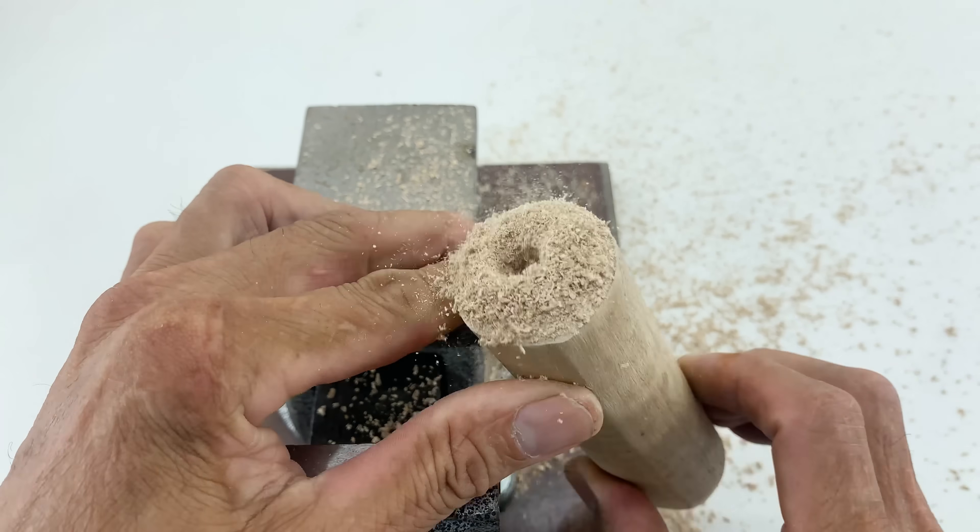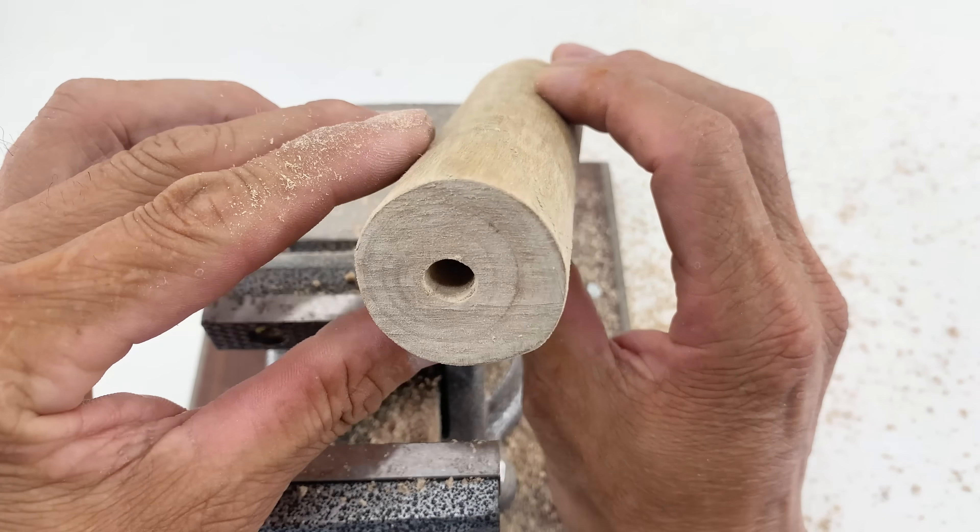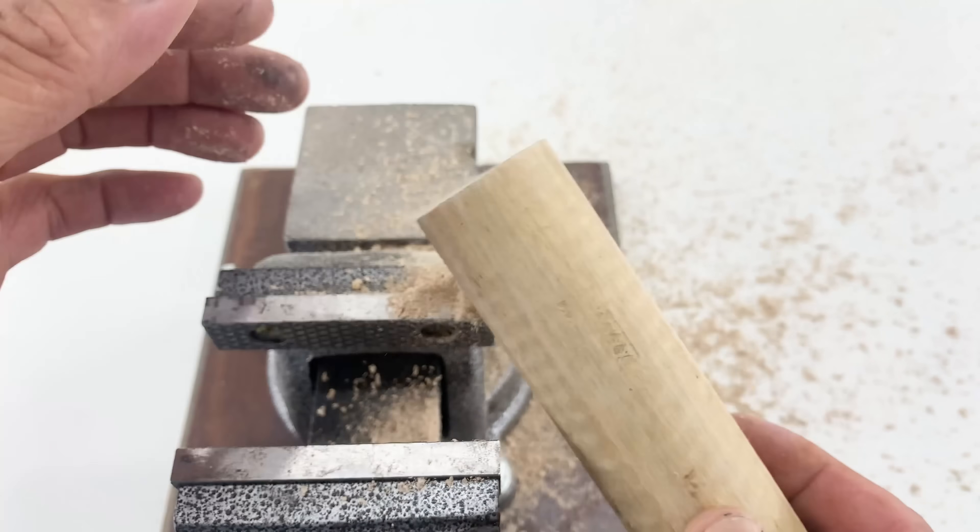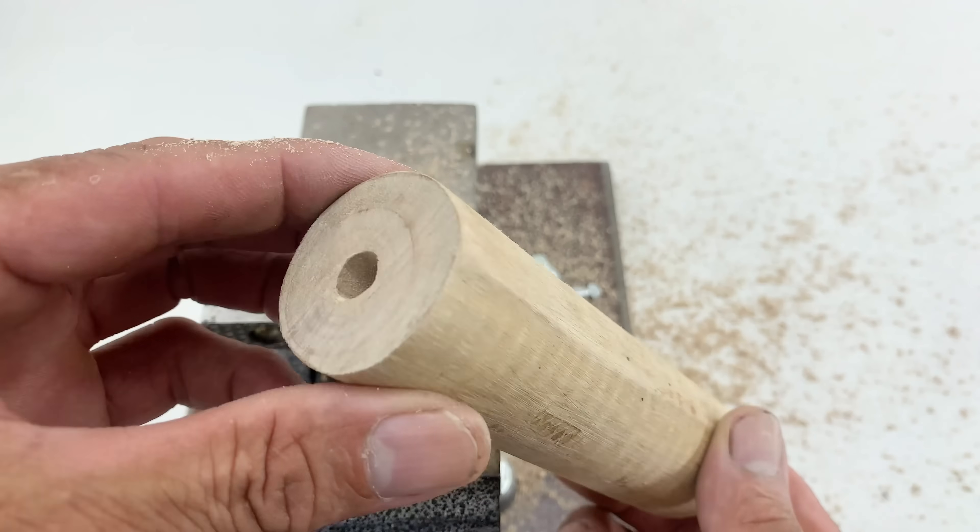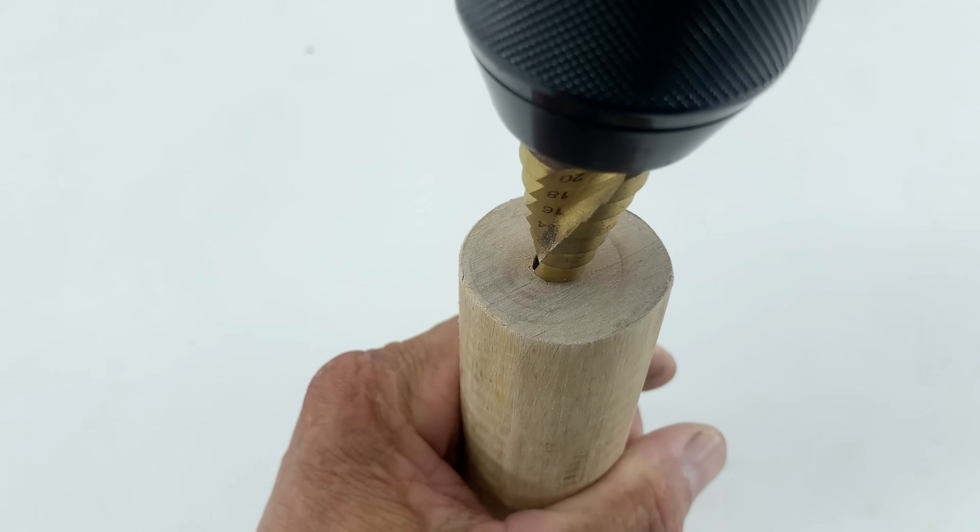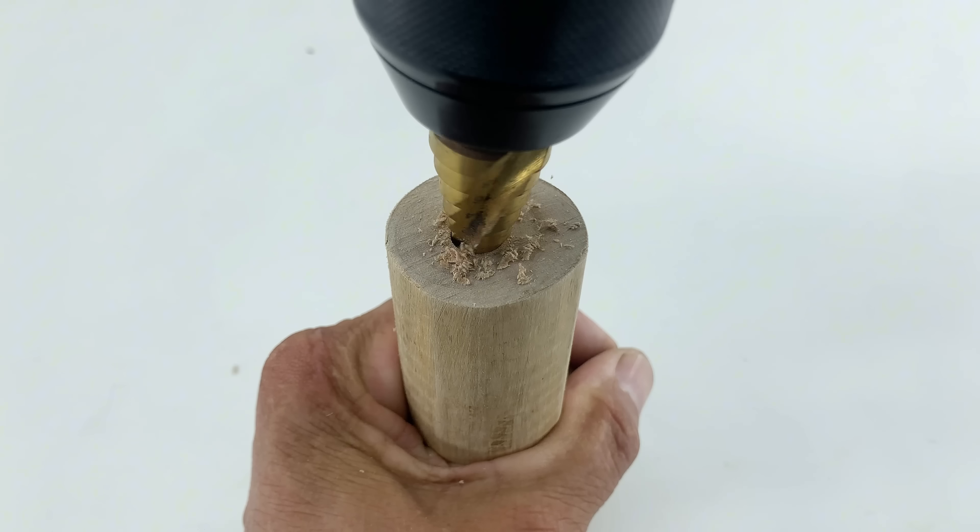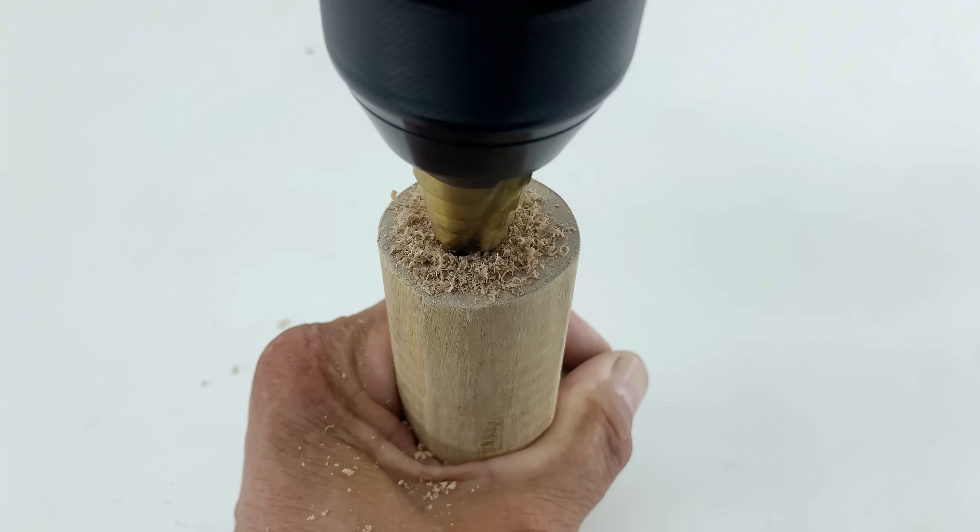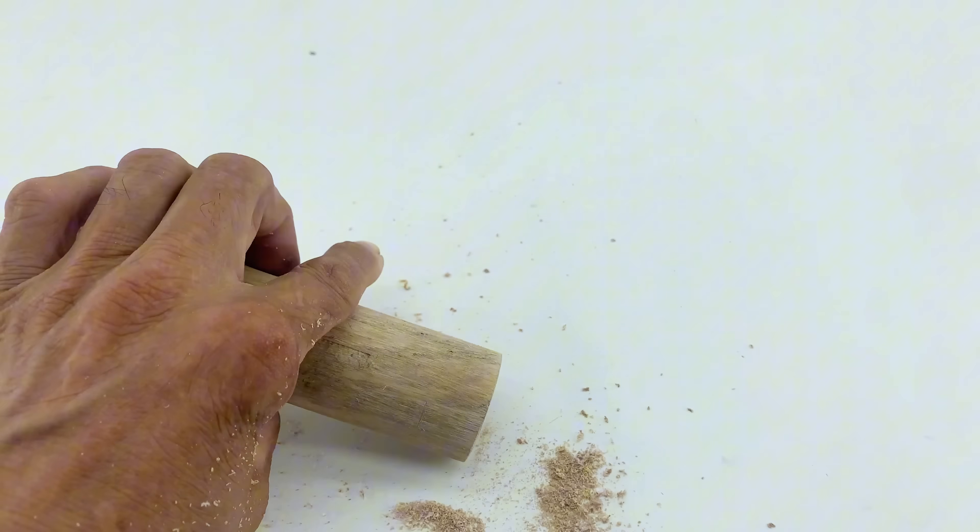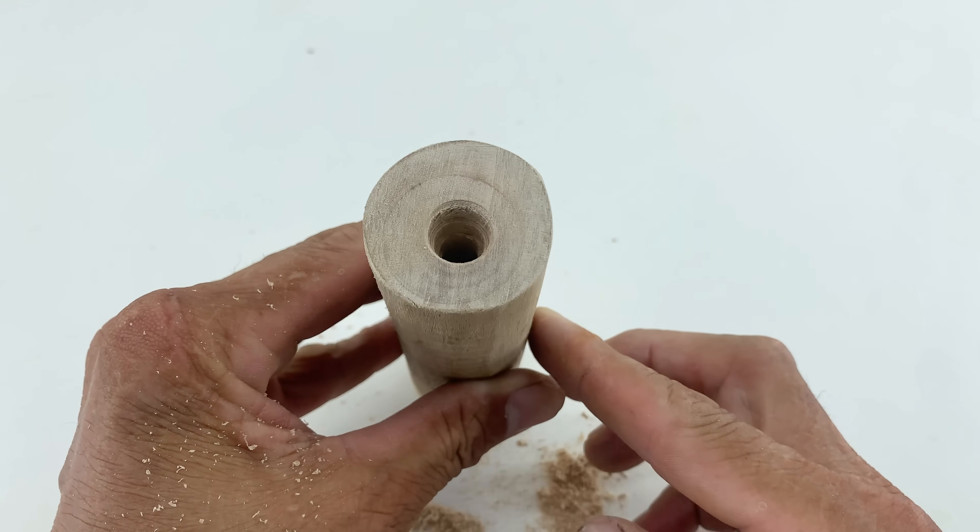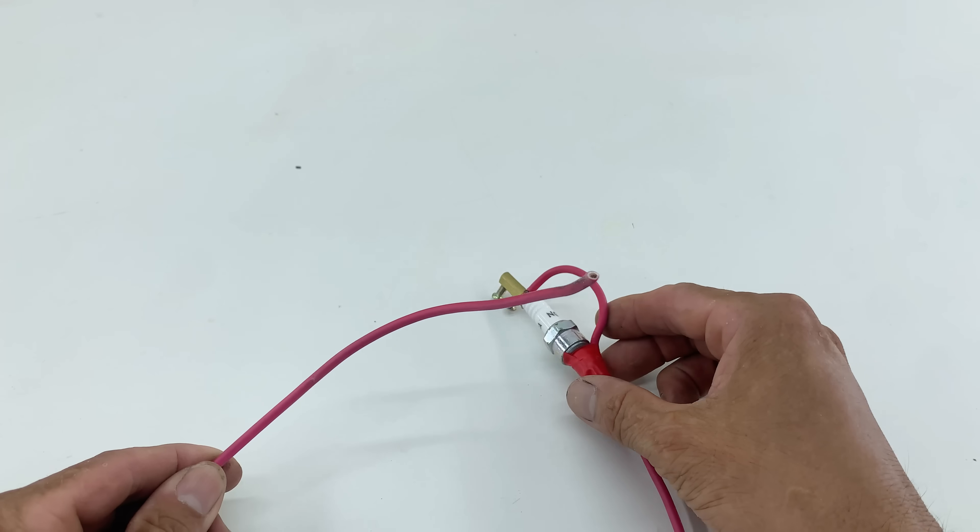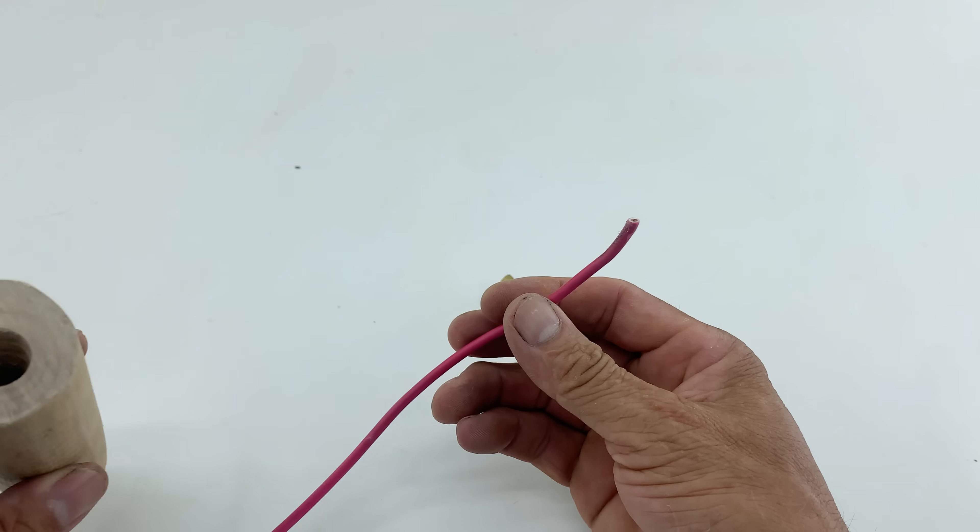Post-drilling, I thoroughly clear the sawdust and debris from the hole and surrounding surfaces to prepare for the next step. I'm now switching to a step drill bit to widen the opening and create a slight chamfer at the top of the hole. This wider opening is designed to precisely fit the ceramic base of the spark plug, ensuring a snug and stable fit when it's inserted.